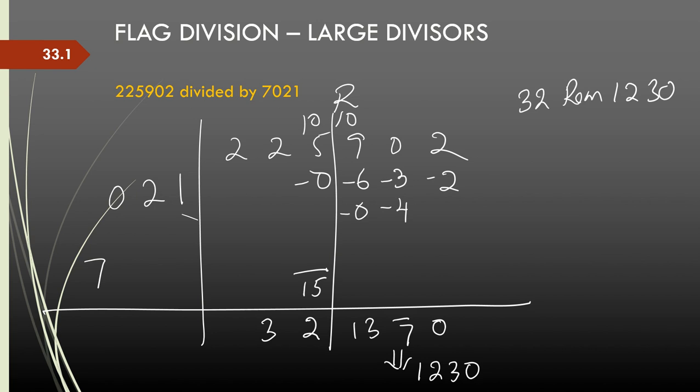Therefore the result of the division is 32 remainder 1230. In this fashion it is very easy to calculate the quotient and remainder very accurately in very few steps. In fact, as the number of digits in the divisor increases, finding the quotient and remainder becomes even easier in this process.